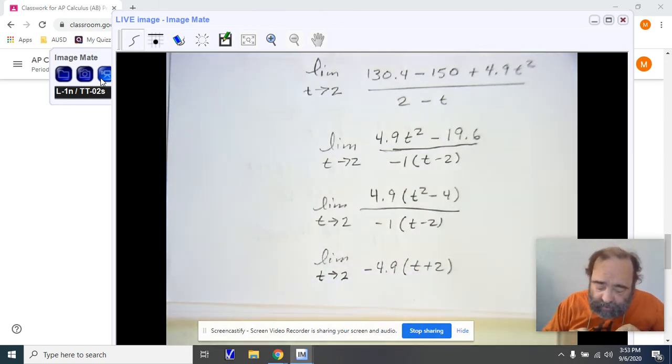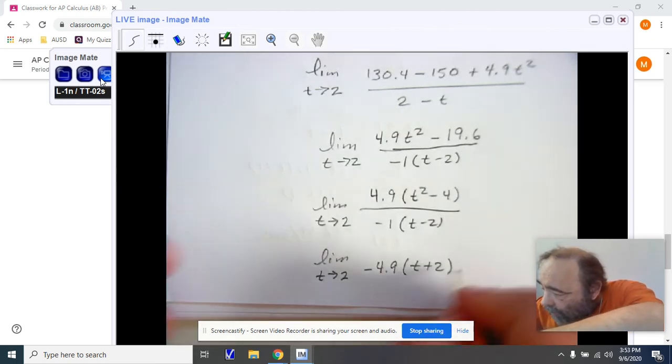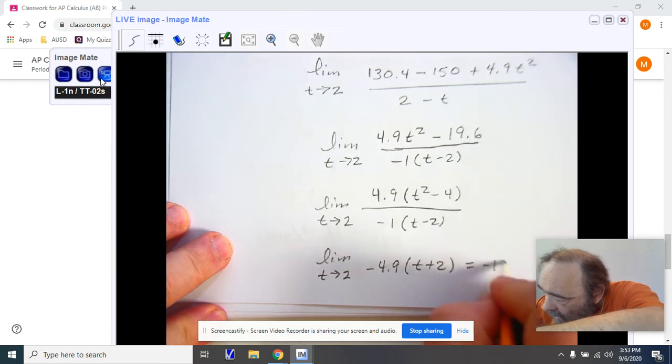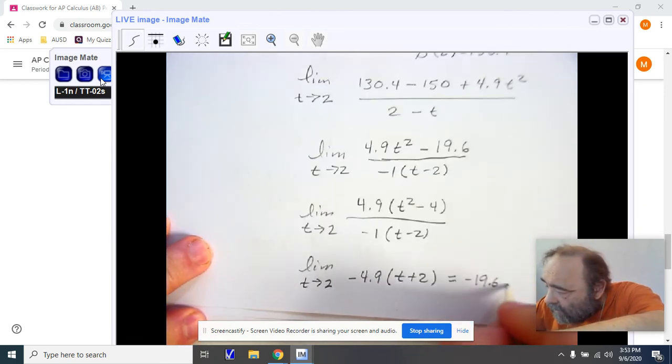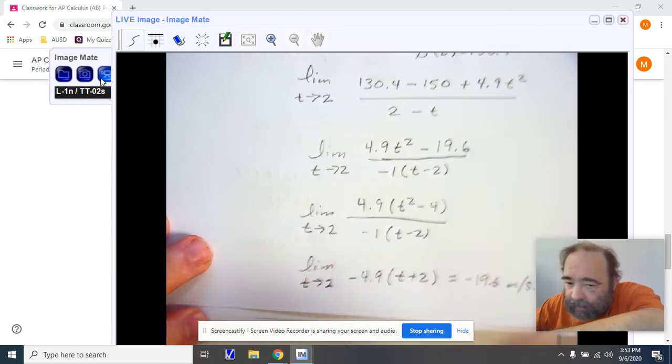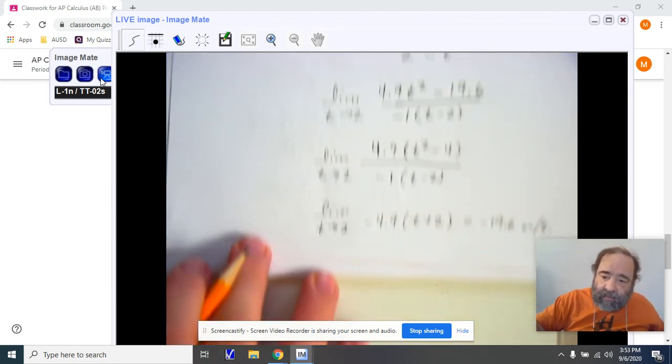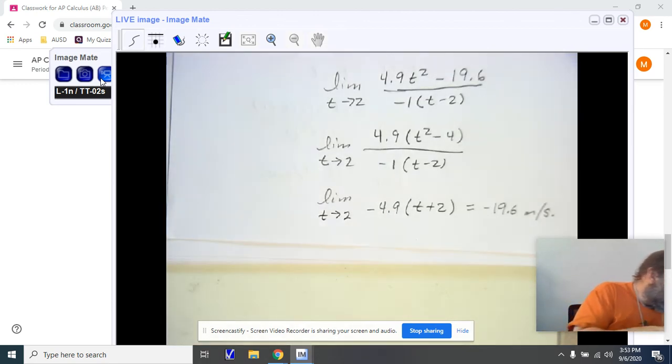I'm going to plug it in. I have 4 times negative 4.9, and I end up with negative 19.6, and this is meters per second. This is what's being asked of you in the questions on page 89.